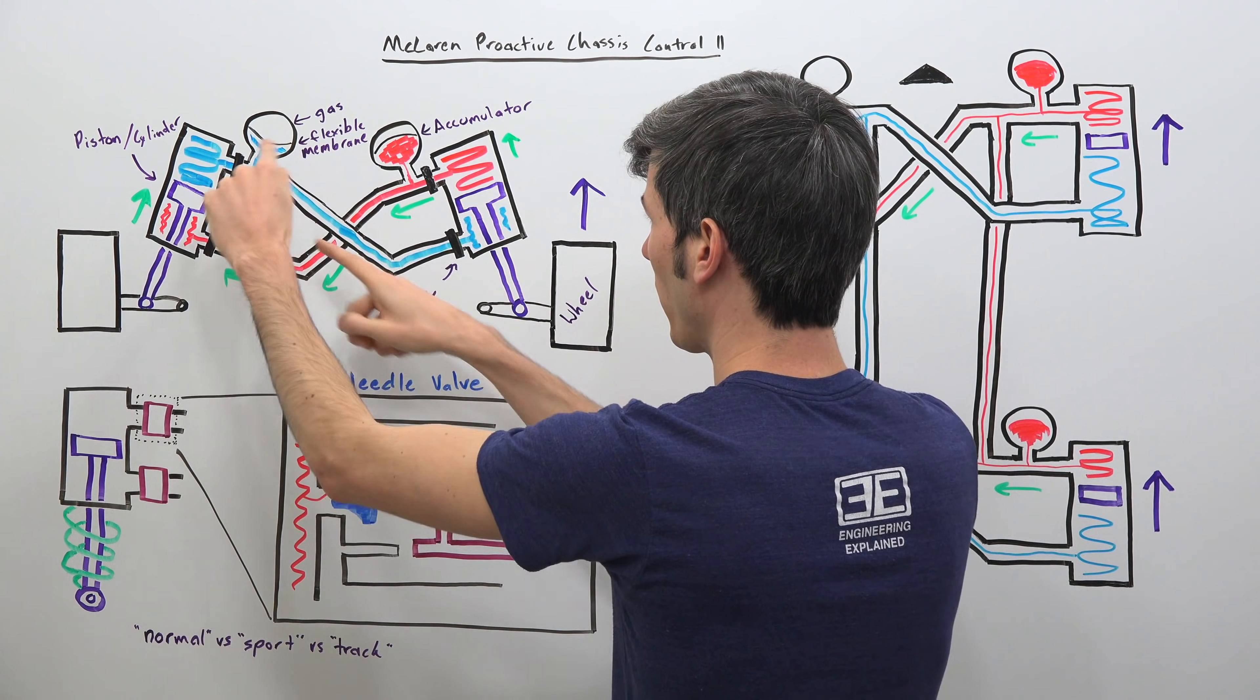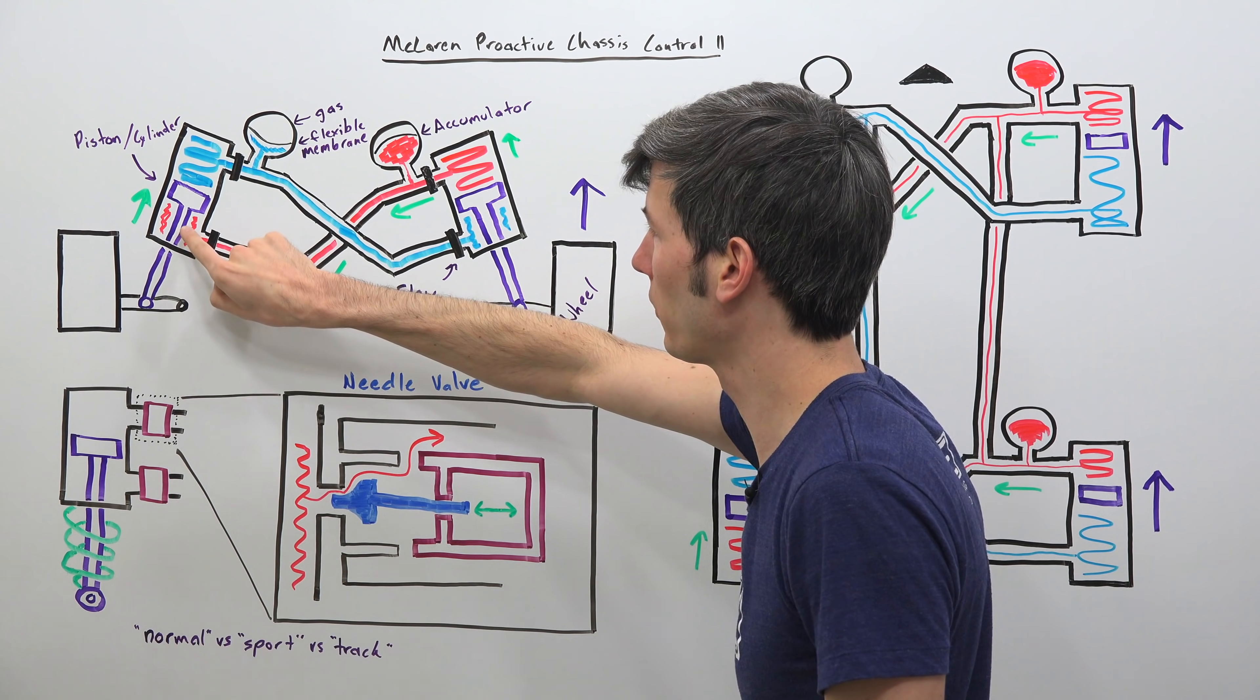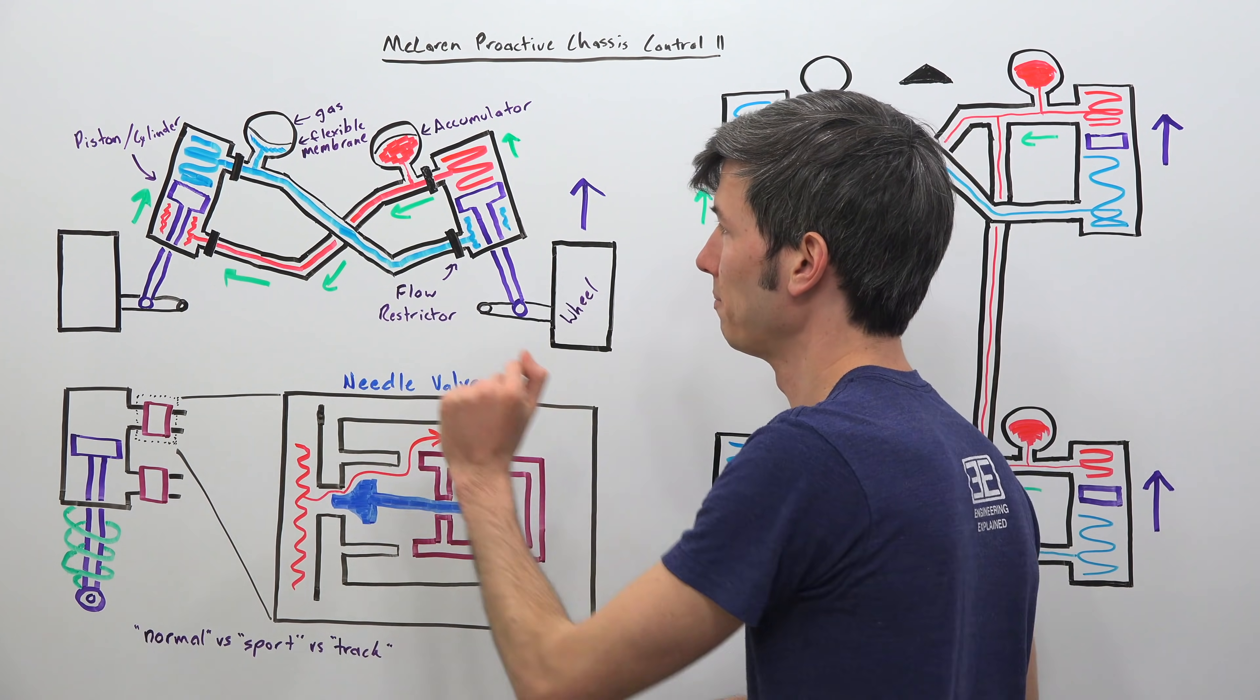So you've got this tubing which routes the fluid from the bottom side of this damper to the top side of this damper and vice versa on this side.